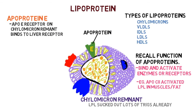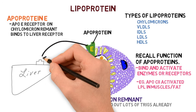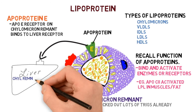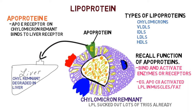The ApoE receptor on chylomicron remnants binds to liver receptors. We're going to draw a liver here, and there is the liver receptor that the ApoE protein is actually going to bind to. The liver will take up the chylomicron remnant and degrade it.